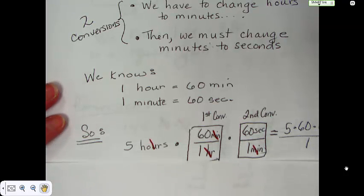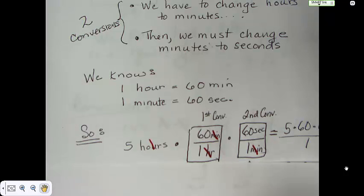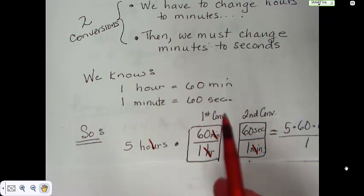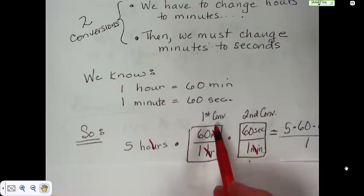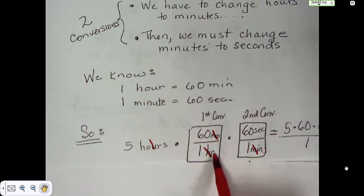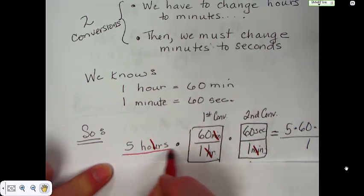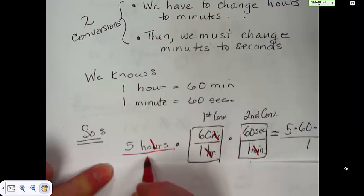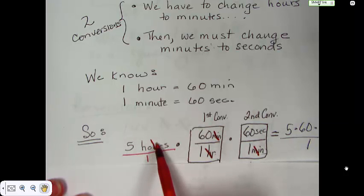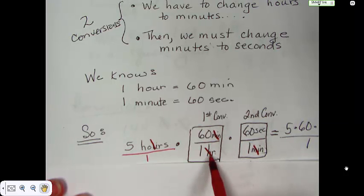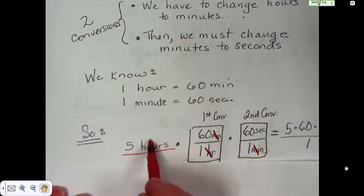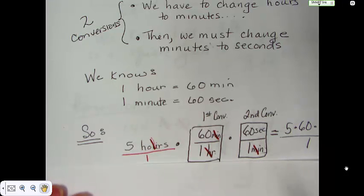So we set it up so that it looks like this. We have five hours, and then we know 60 minutes is one hour. Notice that hours is on the top here, but it's on the bottom here, and the reason we do that is so that we can cross them out and get rid of hours — it's like we're dividing out the hours.